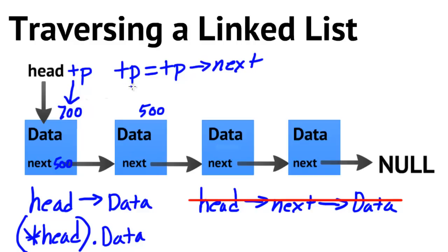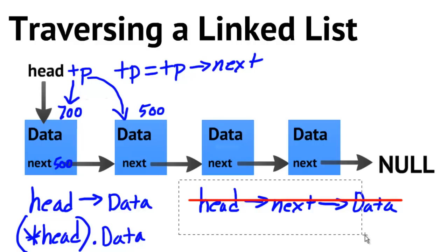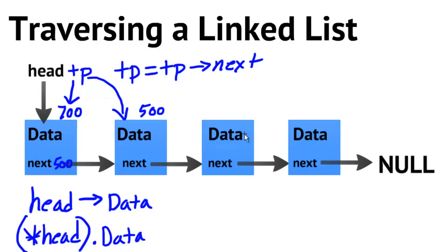TP would initially be set to point to the very first node at address 700. Its next field holds the address 500 of the next node. After the first iteration through the looping structure, TP would be updated to 500, pointing to the second node. Each time through, it points to the subsequent node. Now let me write a little bit of code to show what our looping structure is going to look like.